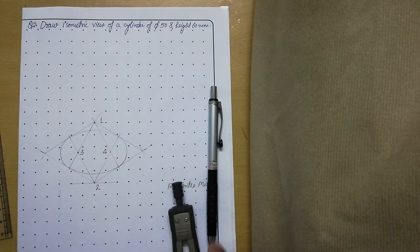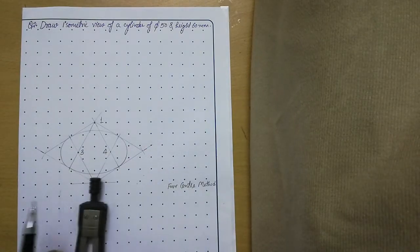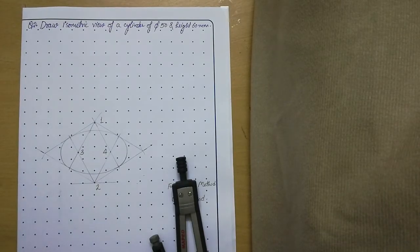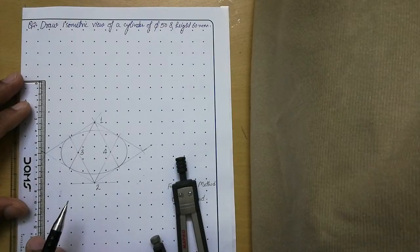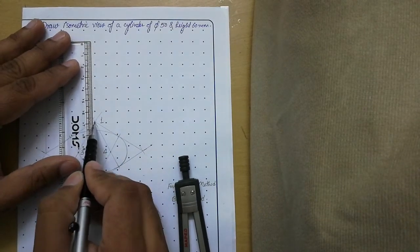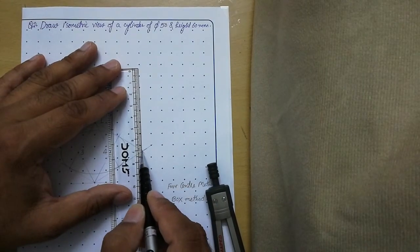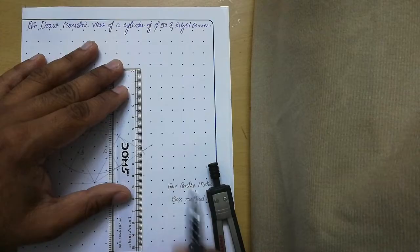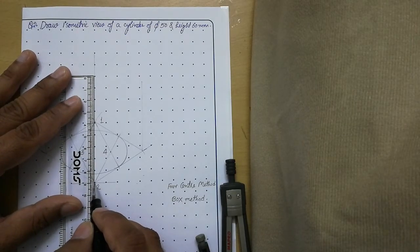Now we need to locate the height of the cylinder, which is 60 mm. For this we apply the box method — we raise all four corners of the base box equal to the height of the cylinder. Place your scale vertically at each corner of the box and draw a thin line of 60 mm from each corner. Make sure your scale is aligned with the grid and is perfectly vertical.